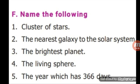Next, the nearest galaxy to the solar system. Andromeda galaxy is the nearest galaxy to the solar system. Next, the brightest planet: Venus is the brightest planet. Next, the living sphere: Biosphere is the living sphere. Next, the year which has 366 days: Leap year has 366 days.